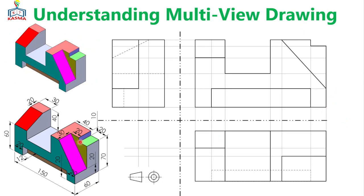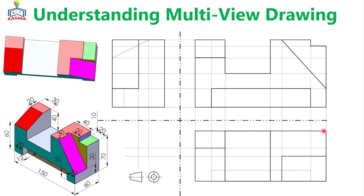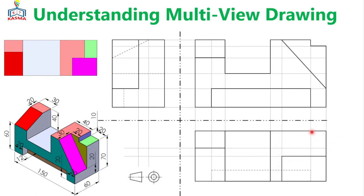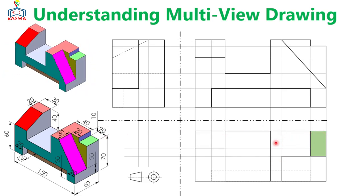The same thing can be applied on the top view. When looking on the top view, previously it was just an inverted L-shape here. But we are adding one surface here, so one line will be added over here. This surface — the green surface — will look like this one. The remaining L-shape will be this one. So the feature is simply added on the top view.